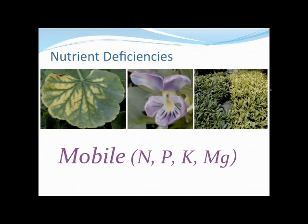Let's go with the mobile elements. We've decided it's an abiotic factor — there's a pattern, so we know it's abiotic. We're going to assume it's a nutrient deficiency. We've also determined that we first started seeing symptoms at the bottom of the plant. With just those few questions, we've narrowed it down to only four possible elements: nitrogen, potassium, phosphorus, and magnesium.